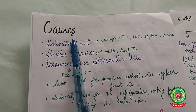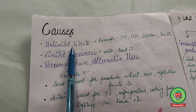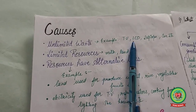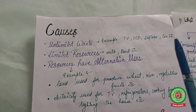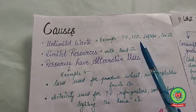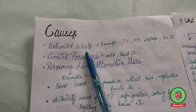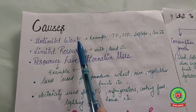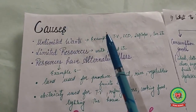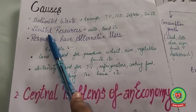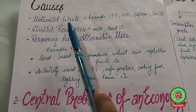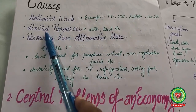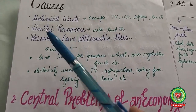The causes of the economic problem: first is unlimited wants. Examples include TVs, LCDs, laptops, cars, gold jewelry, a big bungalow, and a settled job. Human wants are unlimited — if one is satisfied, we go for another. Second is limited resources, which include land, labor, capital, and enterprise — all are limited.